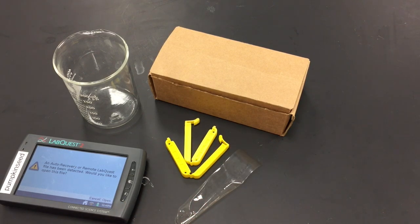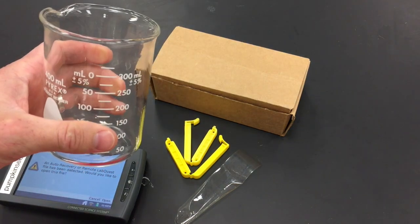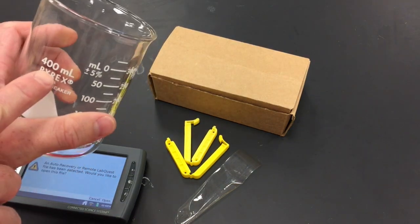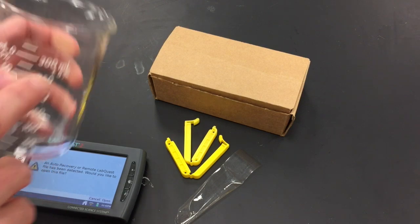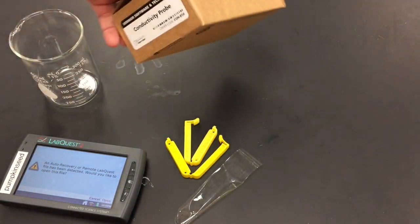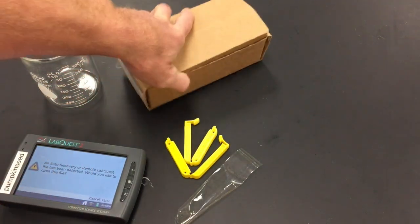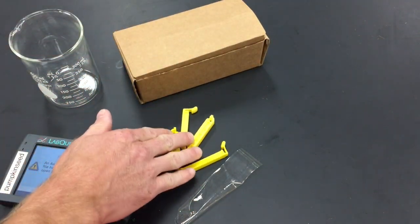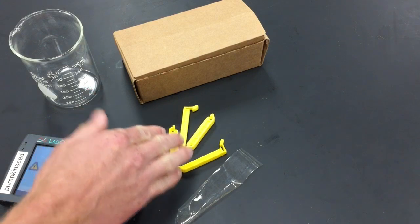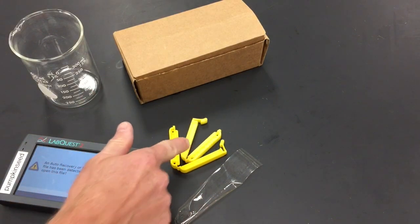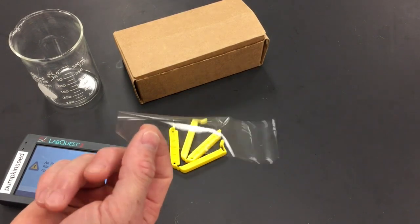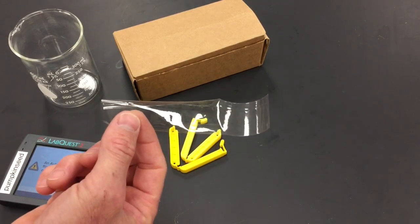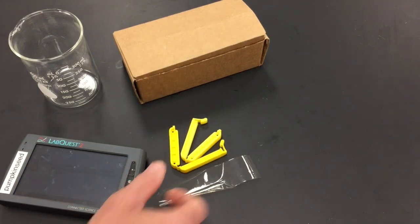The equipment you'll need is a 400 milliliter beaker filled with 300 milliliters of purified water, a conductivity probe, a couple of clamps for the dialysis tubing or string to tie up the ends, a Lab Quest, and a length of dialysis tubing. I cut this five inches or 12 centimeters.